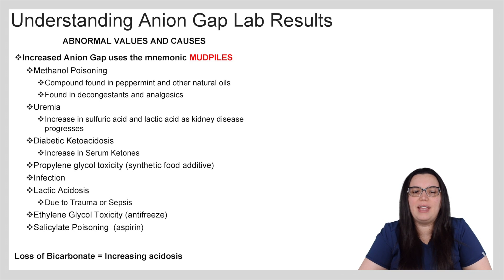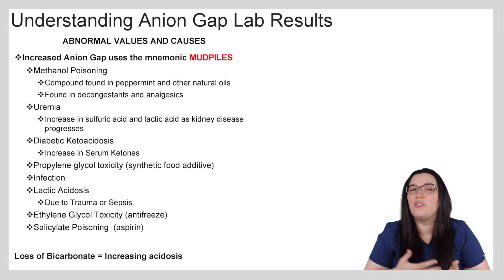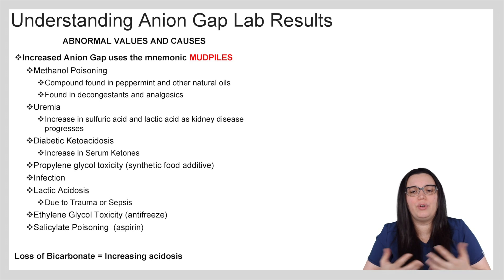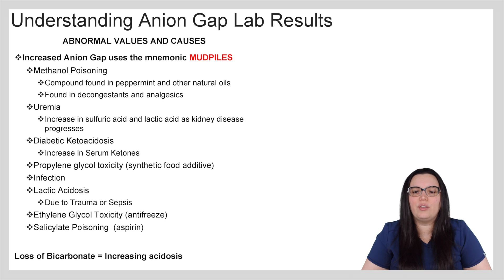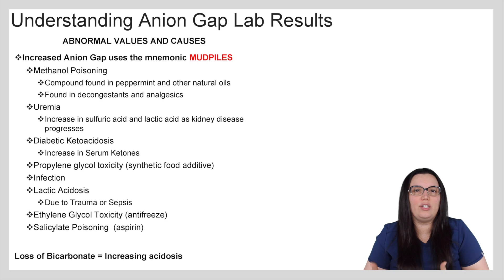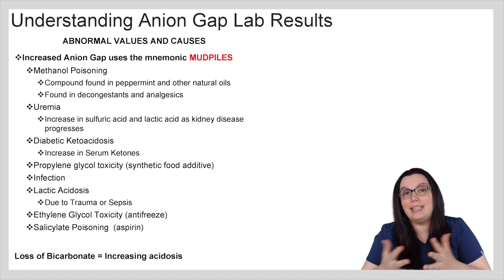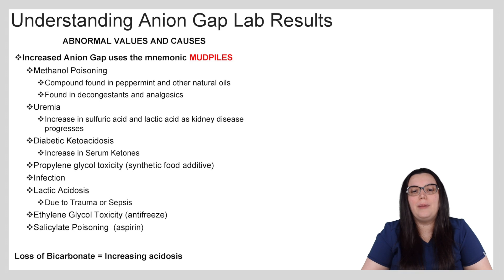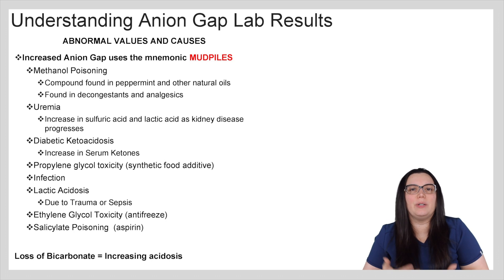For the M, we have methanol poisoning — that's a compound found in peppermint and other natural oils, and it can also be found in decongestants as well as many analgesics. The U stands for uremia — it's an increase in sulfuric acid and lactic acid as kidney disease continues to progress. D stands for diabetic ketoacidosis, which is when we use the anion gap the most because of that increase in serum ketones.